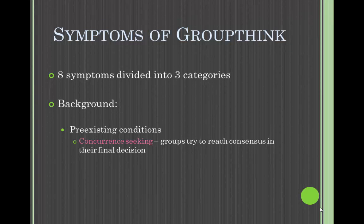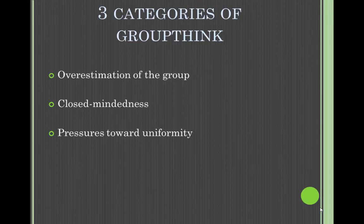Janis also concluded that there are symptoms of groupthink. There are eight symptoms divided into three categories. These pre-existing conditions lead to concurrence seeking — when groups try to reach consensus in their final decision. However, by doing this, it can go too far and symptoms of groupthink can occur. The three categories are: overestimation of the group, closed-mindedness, and pressures toward uniformity.